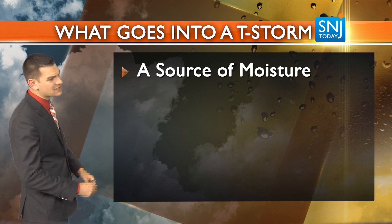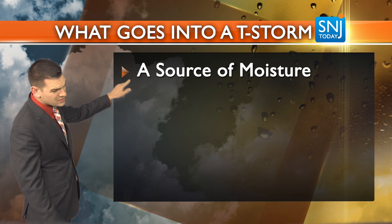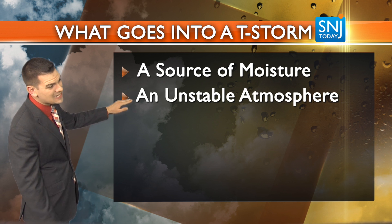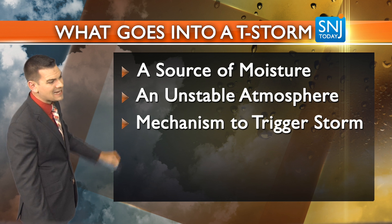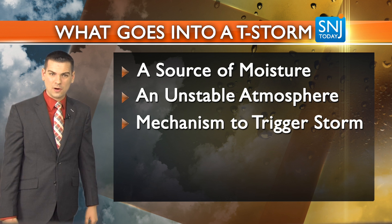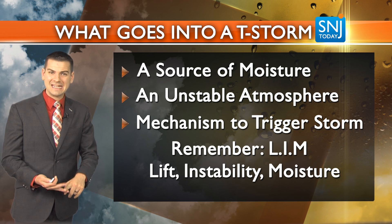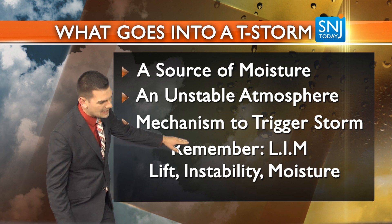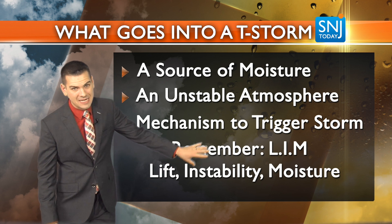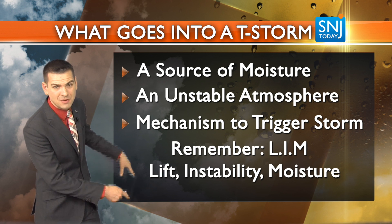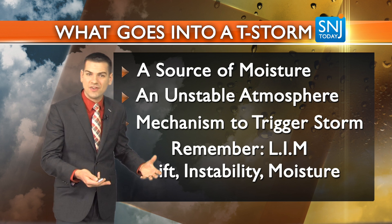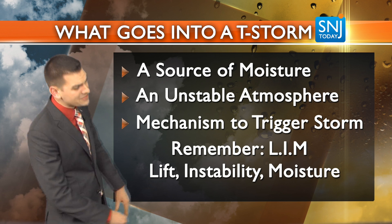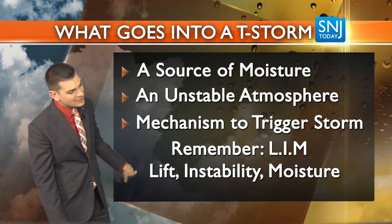So let's recap. You need three things to form a thunderstorm: a source of moisture, an unstable atmosphere, and a mechanism to trigger the storm. Lift, instability, and moisture. Remember this acronym: LIM. Lift is that convection with the warm air rising into the atmosphere, creating the conditions needed for thunderstorms. Instability is directly related to lift.